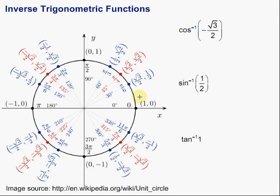Let's take a look at inverse trigonometric functions. When we're working with trigonometric functions, sometimes we'll know the angle measure and we'll want to find a missing side length in a triangle. But other times, we'll know the ratio of those side lengths and we'll want to find that angle measure. So to do that, we'll use the inverses.